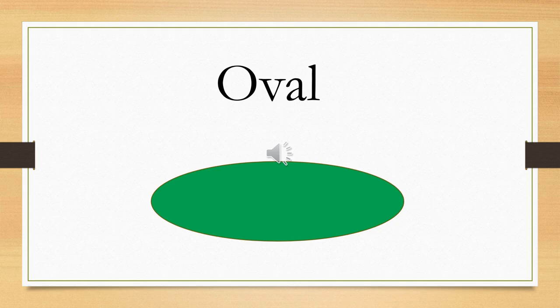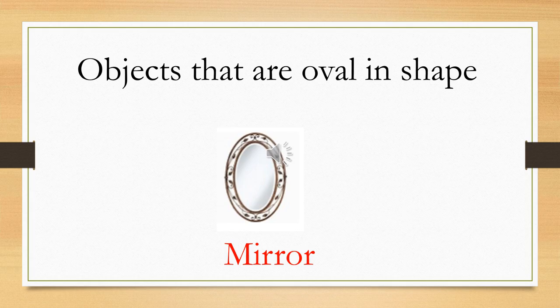Now we will see the different objects that are oval in shape. Can you see this mirror? Yes, it is oval in shape.